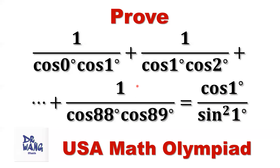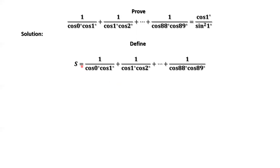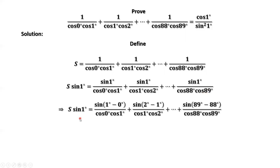We are going to derive an important identity to simplify the left-hand side of this equation. We define S equal to this sum, then multiply both sides by sine 1°. Therefore, we have S times sine 1° equals sine 1° in the numerator for each term.